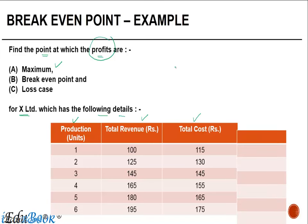In situation one, total revenue is 100 and total cost is 115, so profit is 100 minus 115 = minus 15. Next, 125 minus 130 = minus 5. Then 145 minus 145 = 0. Then 165 minus 155 = positive 10. Then 180 minus 165 = positive 15. And finally, 195 minus 175 = positive 20.